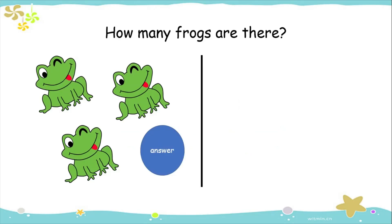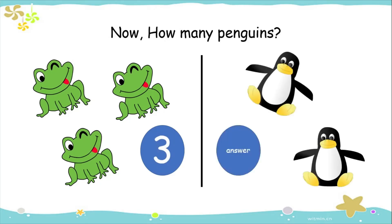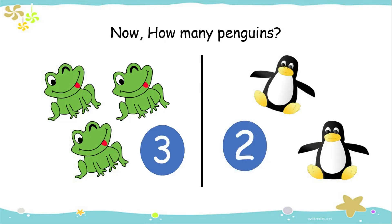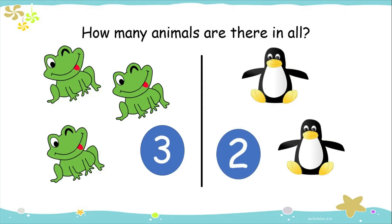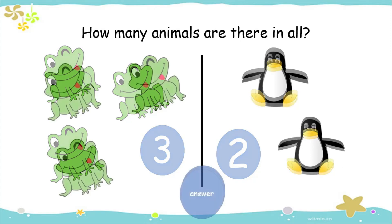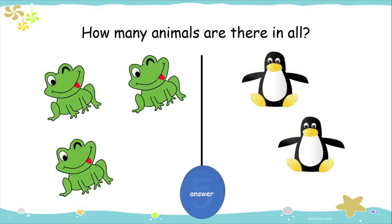Let's do it again! How many frogs are there? There are three frogs. Now, how many penguins? There are two penguins. How many animals are there in all? Three and two makes five.